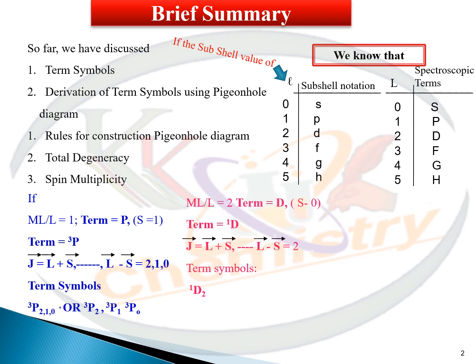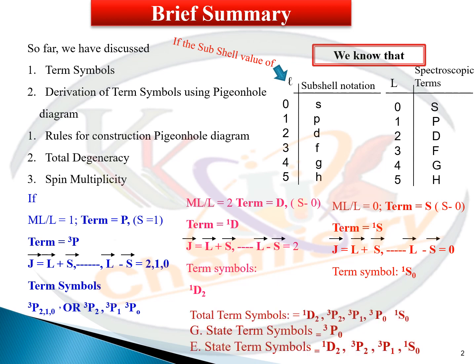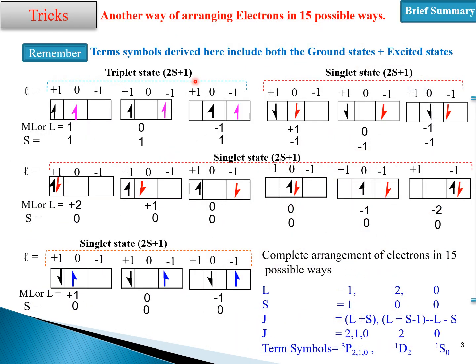Similarly, for L equal to 2 and S equal to 0, calculating the J value gives J=2, so the term symbol will be singlet D2 (1D2). For L equal to 0, the term symbol is singlet S0 (1S0). In total, we have five term symbols, of which triplet P0 is the ground state and the rest are excited states.